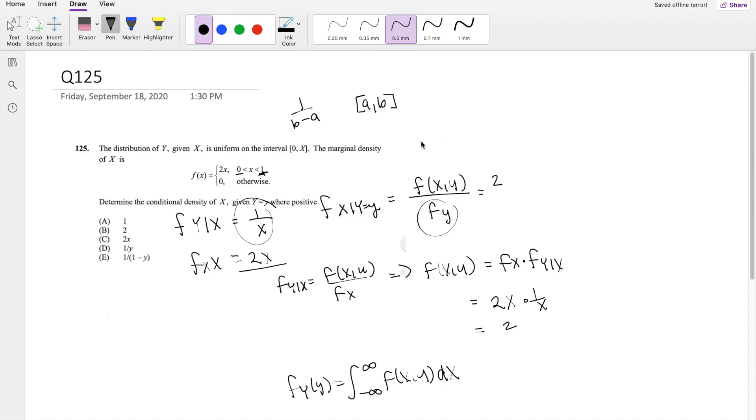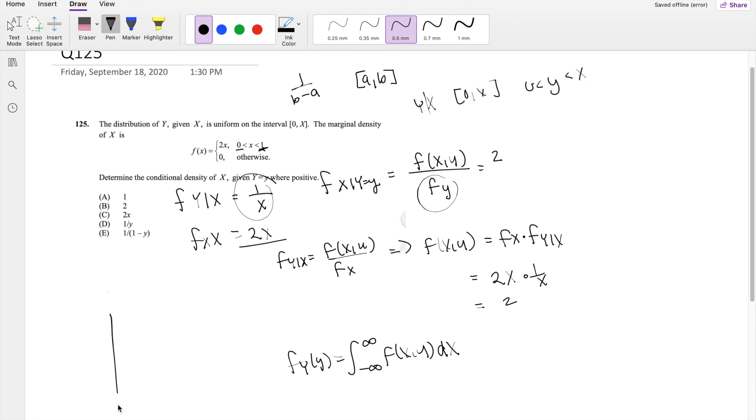So what are the bounds of X? We know that Y given X exists on 0 to x. So that means Y must be between 0 and X. So then we can actually draw a mini graph here. This is y equals x.